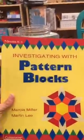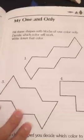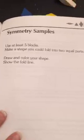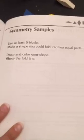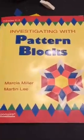I have a pattern blocks book I really like. It starts with some fun stuff like building roads, then filling in shapes and deciding what color will work ahead of time. There are activities like 'use at least five blocks to make a shape you could fold into equal parts,' so they're creating a symmetrical shape and showing where the fold line is — that's symmetry built right in.